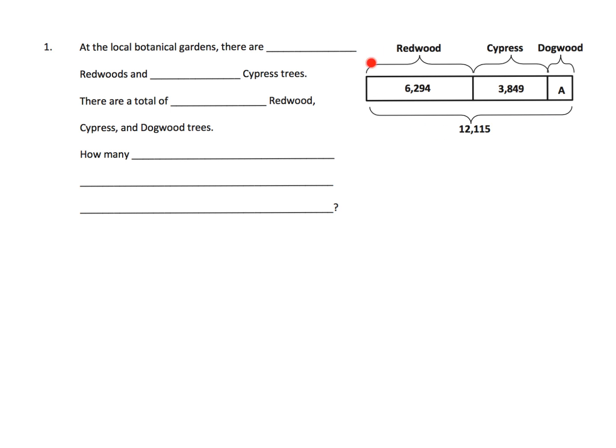So I'm looking at this problem and I see my tape diagram. I see redwood, cypress, dogwood. These are trees, I think. And then it says at the local botanical gardens there are blank redwoods. Well I'm going to look over here and I see that there are 6,294 redwoods and there are blank cypress trees. So I can see right there, so I'll put 3,849 cypress trees.